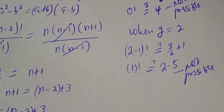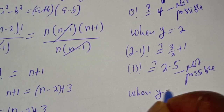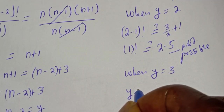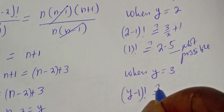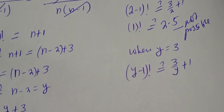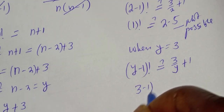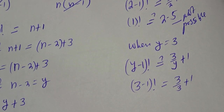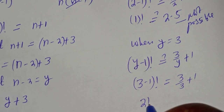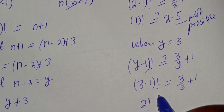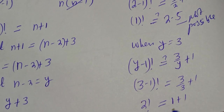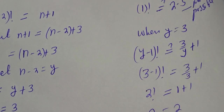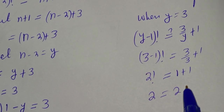So let's consider when y equals 3. We have y minus 1 factorial must be equal to 3 over y plus 1. Then 3 minus 1 factorial must equal 3 over 3 plus 1. That is 2 factorial equals 1 plus 1. Therefore the left hand side 2 is equal to the right hand side 2, which is true.